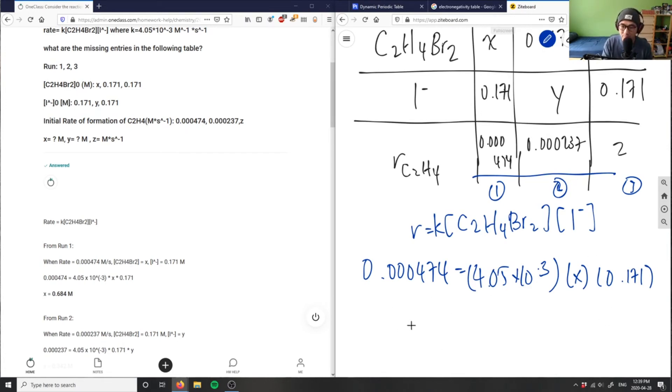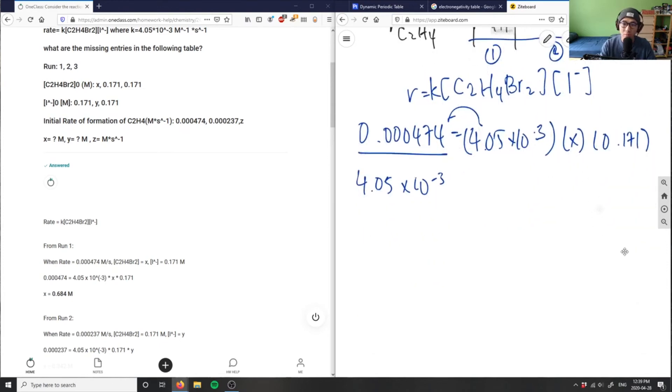So I'm going to divide both sides by 4.05 times 10 to the negative 3. 0.000474 divided by 4.05 times 10 to the negative 3 gives me 0.117037 equals X times 0.171. I can simply divide this number by 0.171, which is my X value, which is 0.684 here, which is correct.